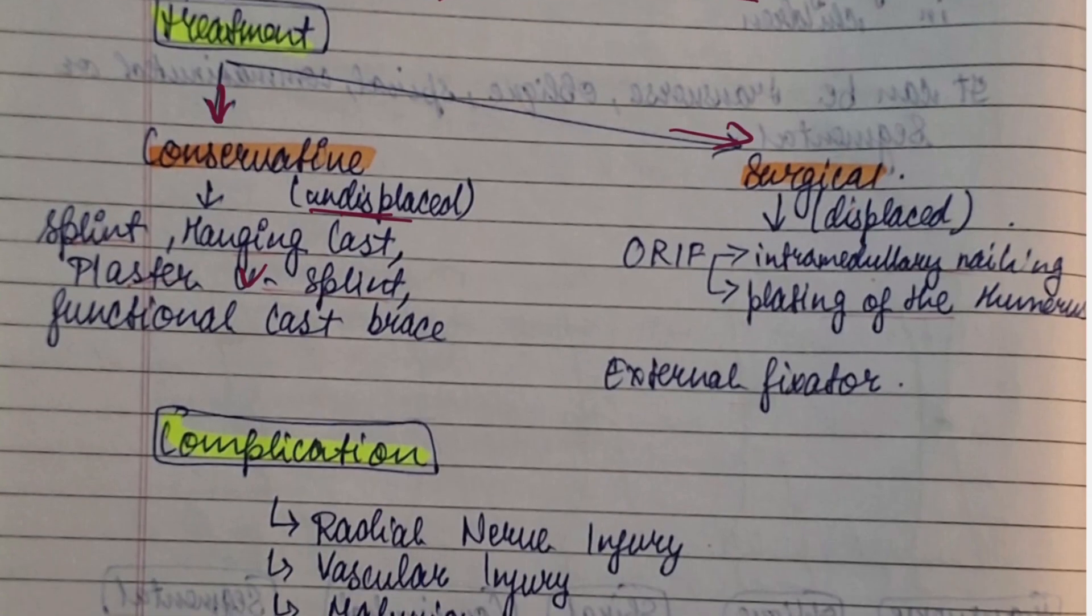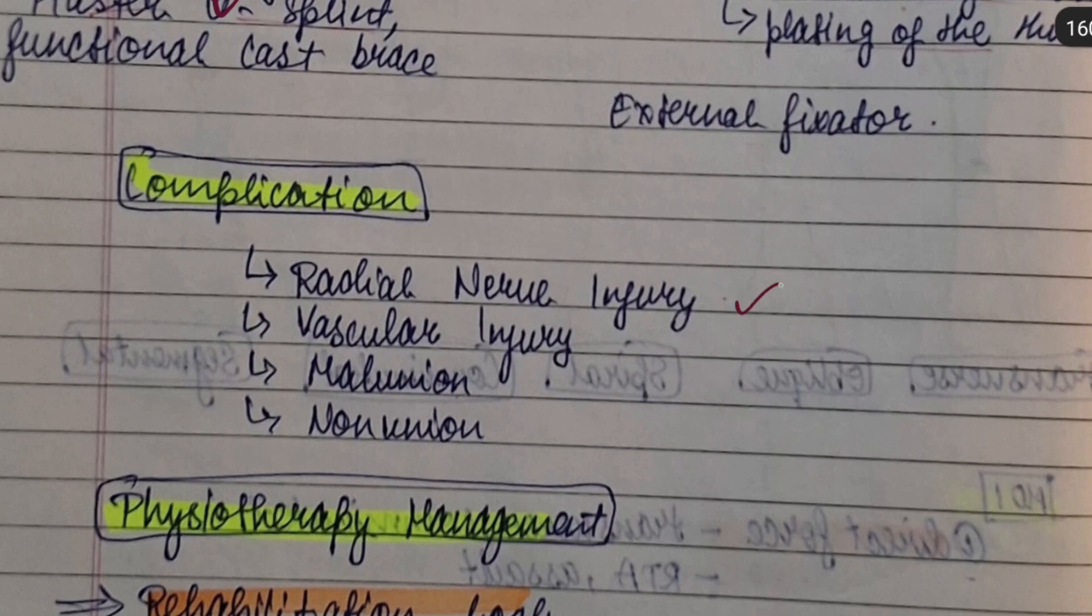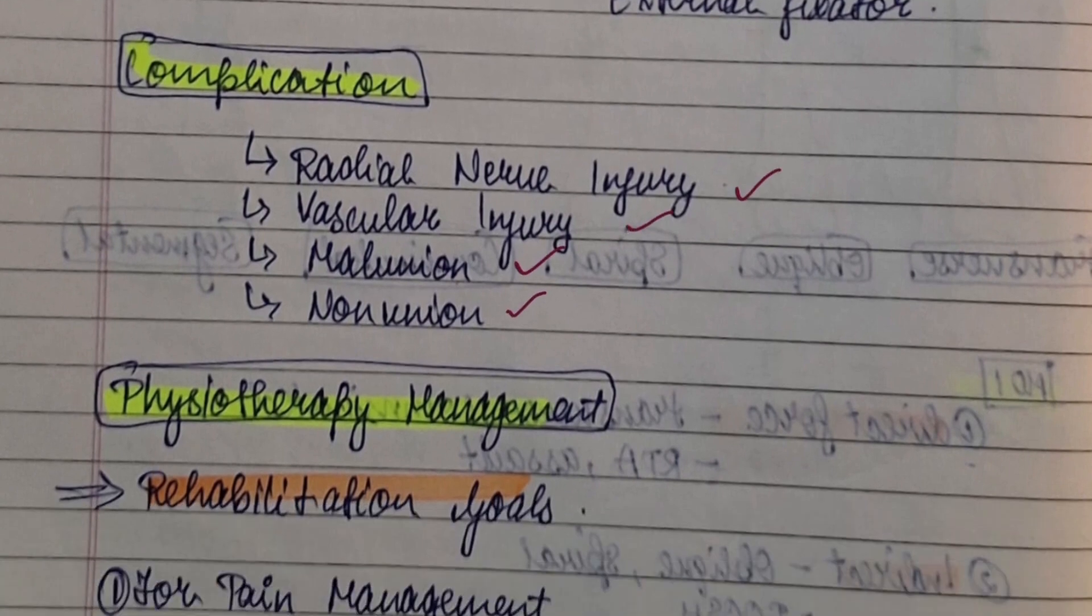Complications can be radial nerve injury, vascular injury, malunion, non-union.